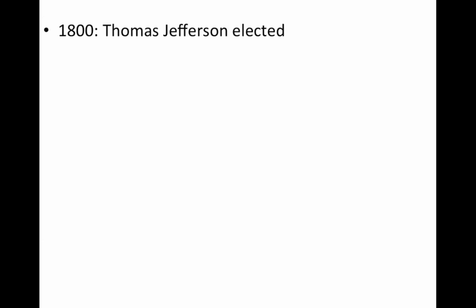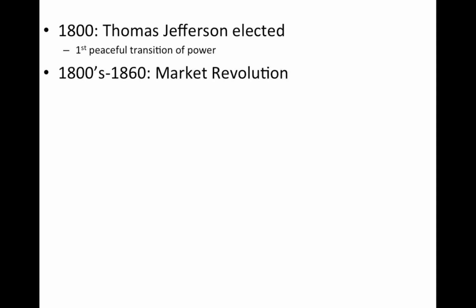In 1800, it's an important year because Thomas Jefferson is elected — this is the first peaceful transition of power. The Federalists are never going to serve in the presidency again, and the Constitution worked. In the period 1800 to 1860, there's no exact date — you have the market revolution going on: textile mills in New England, the South growing their cotton, and transportation improvements throughout this period.